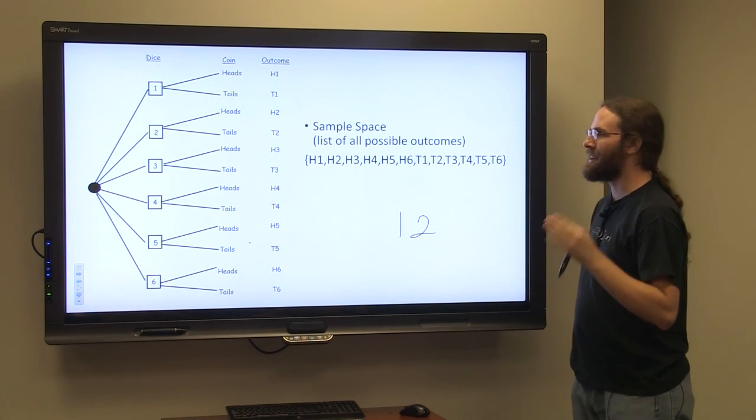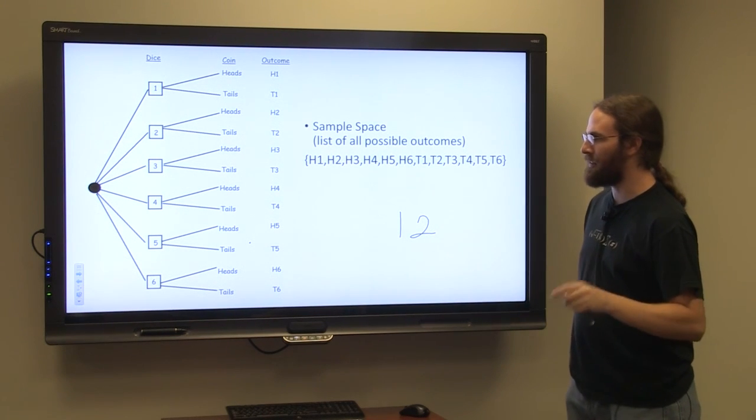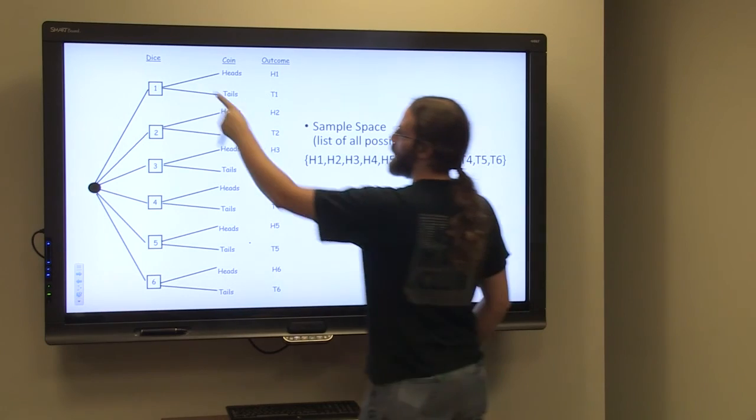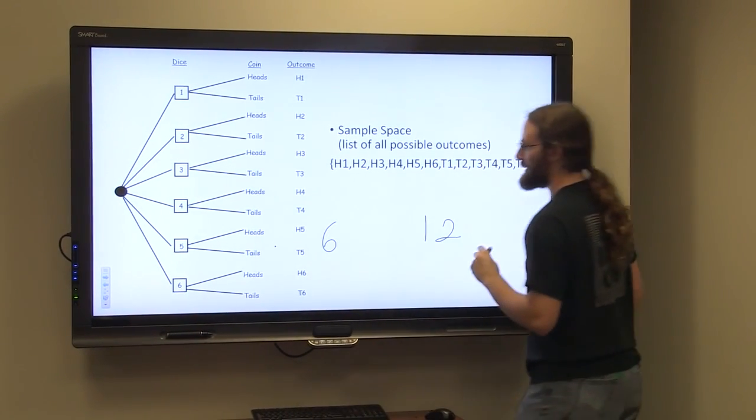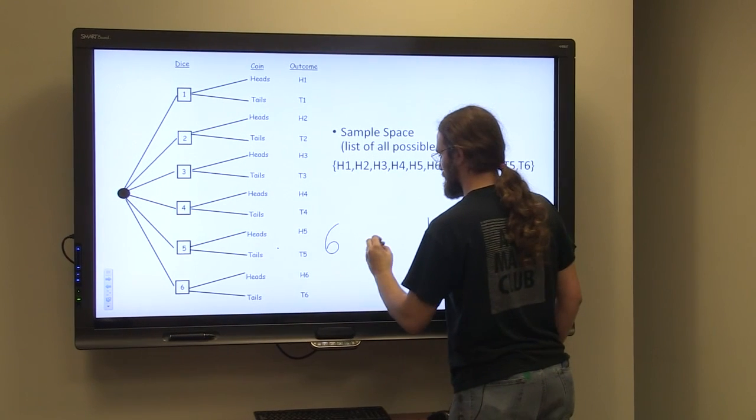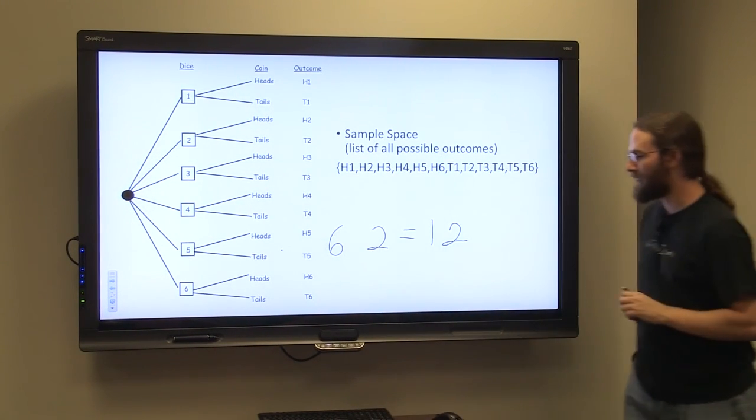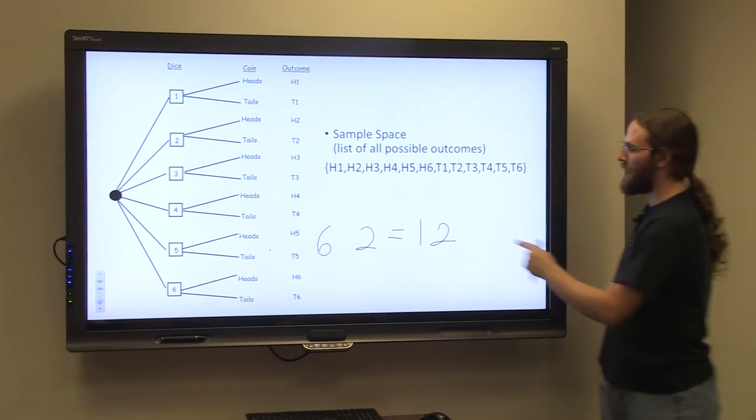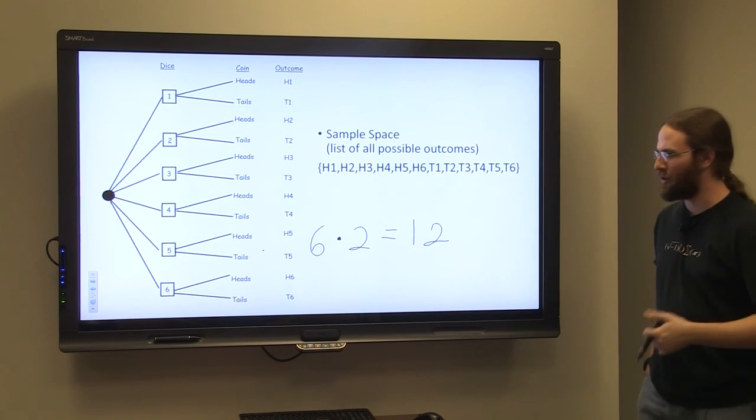Because these are independent events, we can do something very helpful here. When you roll a die, there are six outcomes. When you flip a coin, there are two outcomes. So we can see another way to arrive at 12 would have been six times two: the number of outcomes for the first event times the number of outcomes for the second event.